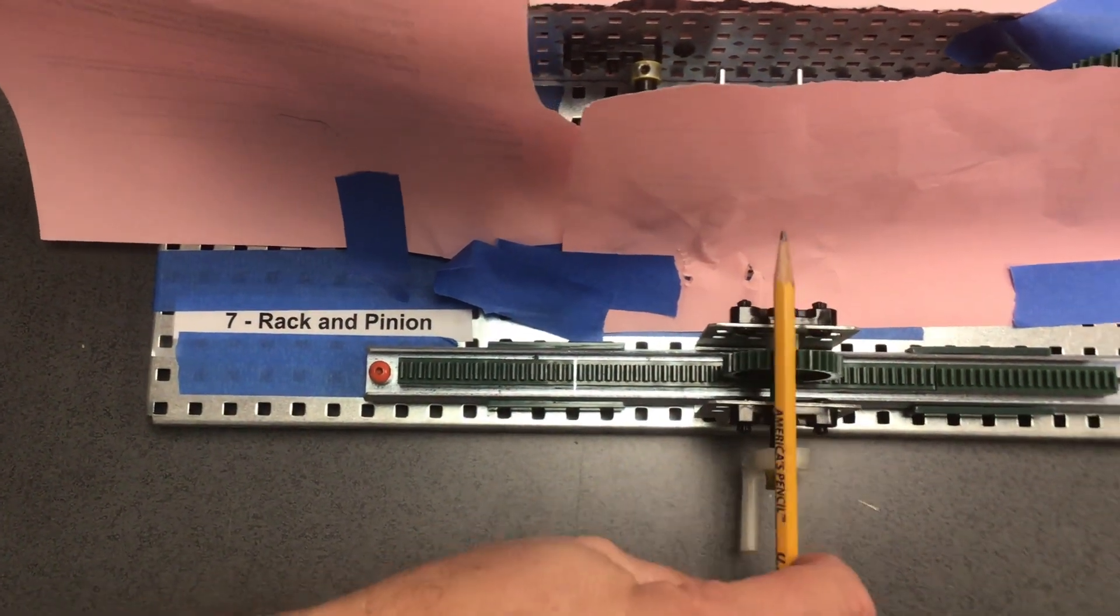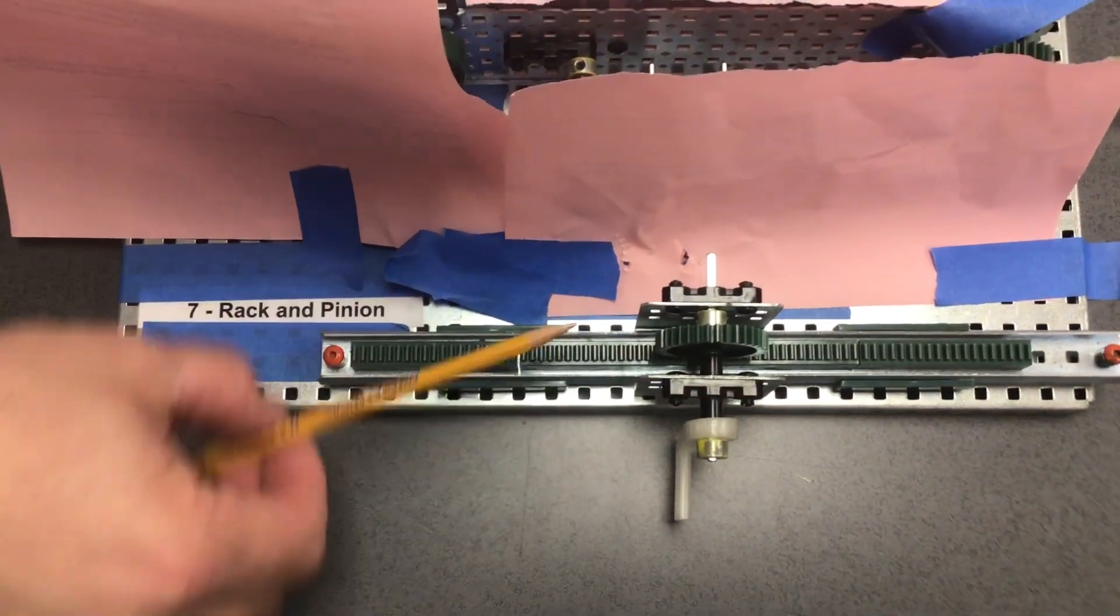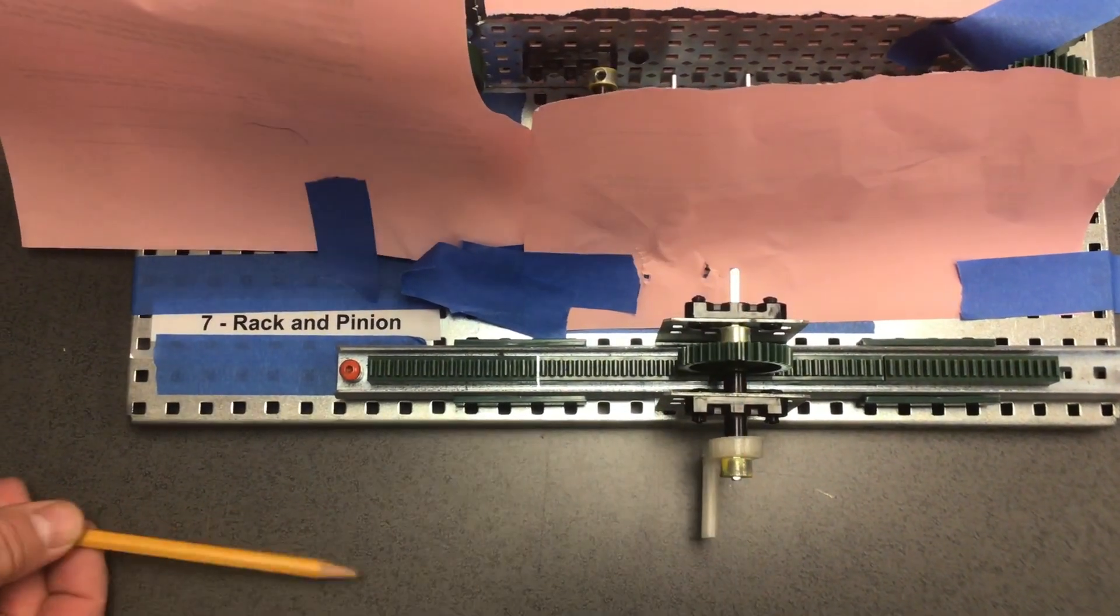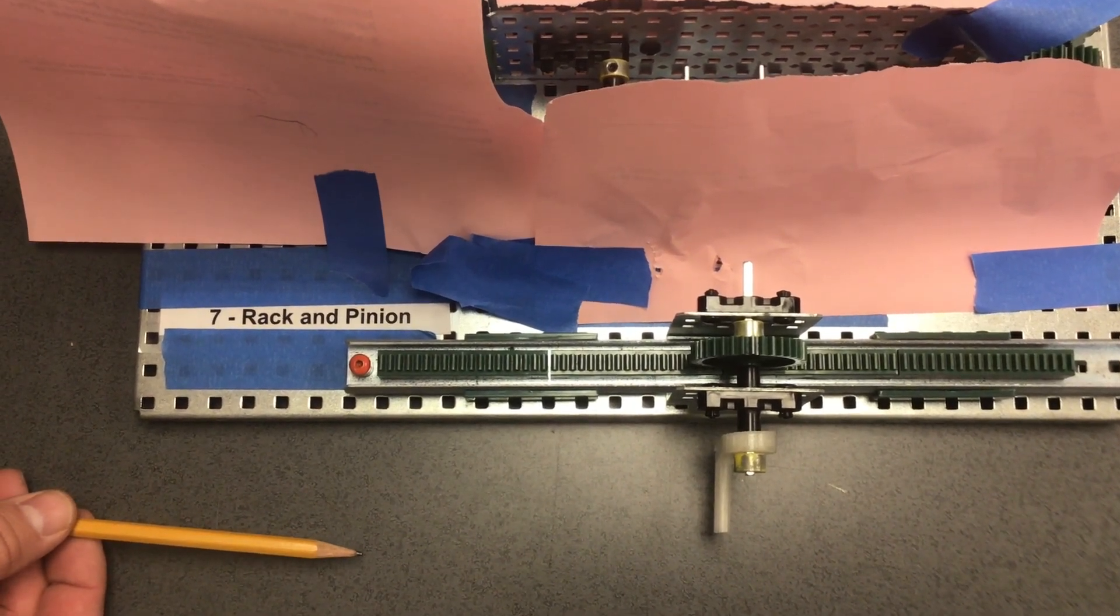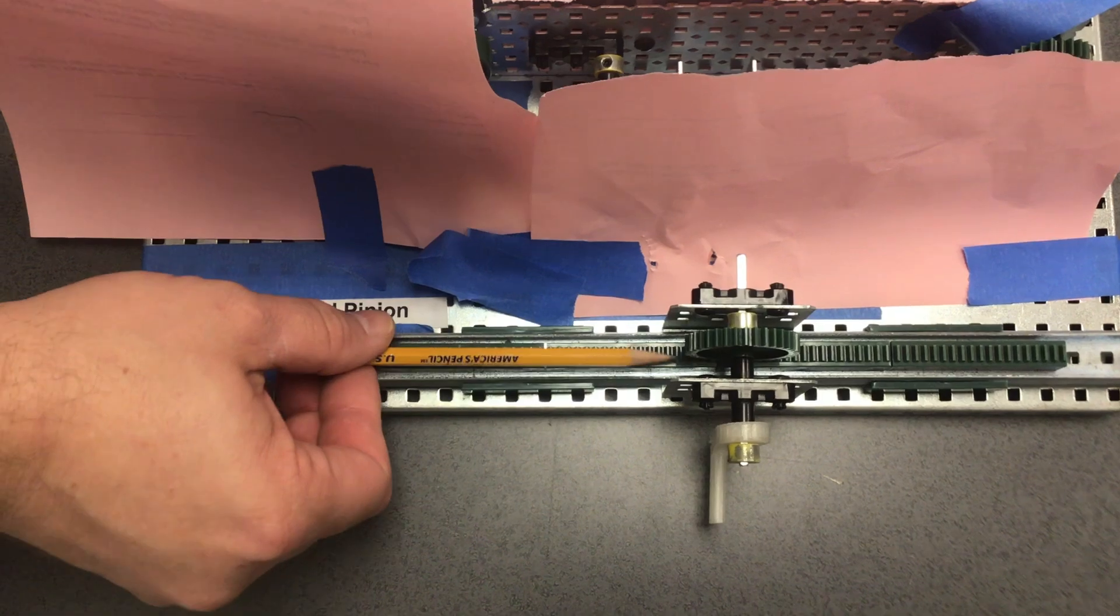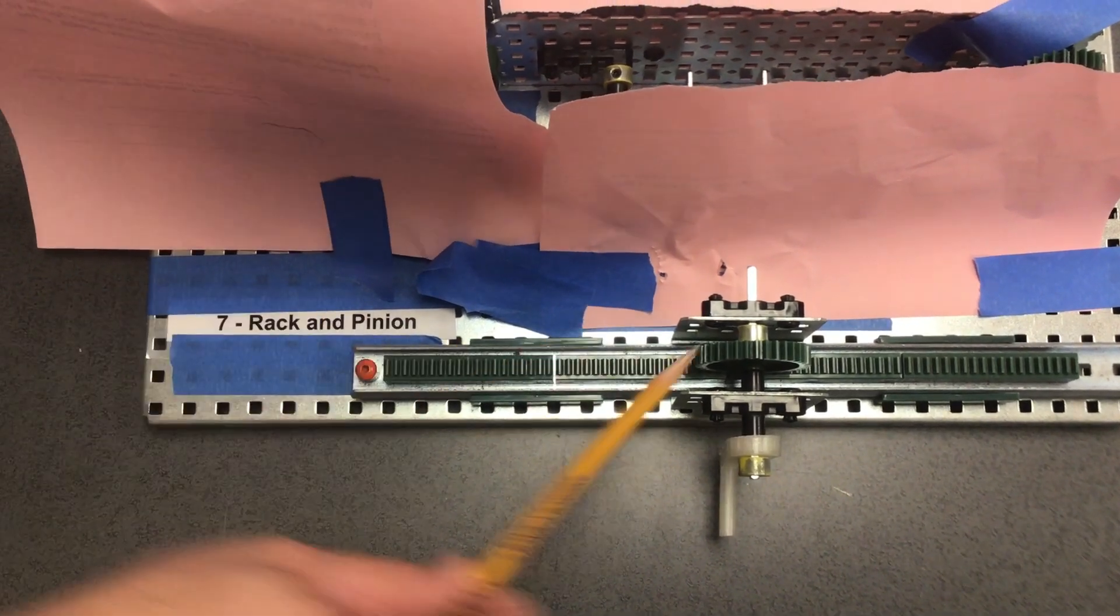The pinion gear is actually on top of and that axle goes through or above the rack. So the relationship angle of the input to the output is that it is intersecting. It crisscrosses.